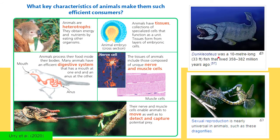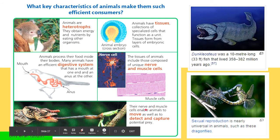What key characteristics of animals make them such efficient consumers? Being heterotrophs — they must obtain energy by eating other organisms. They have specialized tissue that can be formed into organs and organs into organ systems. They have a very efficient digestive system that starts with a mouth and ends with an anus. They have highly specialized nerve cells that can direct the muscle cells, enabling them to move, detect, and capture prey — allowing them to become excellent predators.